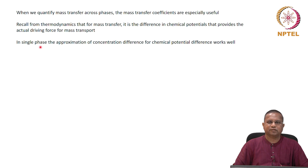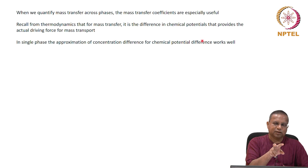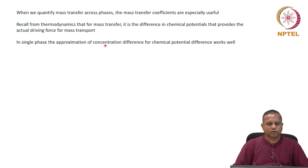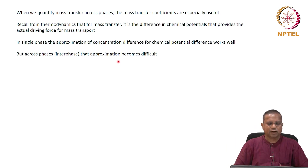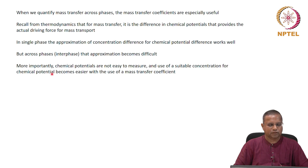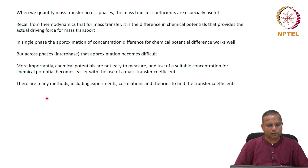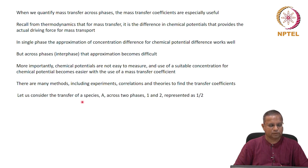In a single phase, the approximation of concentration difference for chemical potential difference works well. It does not matter whether you use the difference in chemical potential or the difference in concentration, as long as you couple it with an appropriate transfer coefficient — the flux will work perfectly. But across phases or inter-phase, that approximation becomes difficult. Use of a suitable concentration for chemical potential becomes easier with the use of a mass transfer coefficient. There are many methods including experiments, correlations, and theories to find the transfer coefficients.